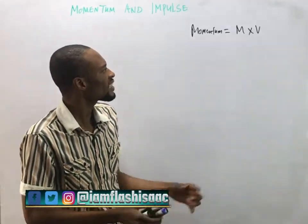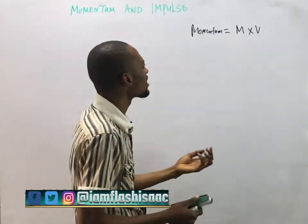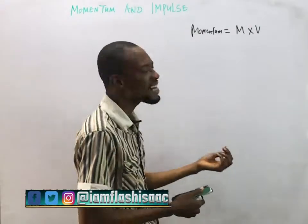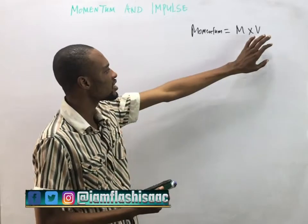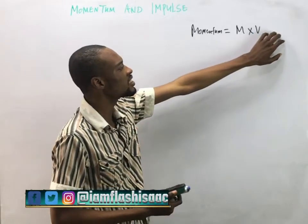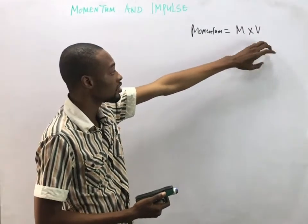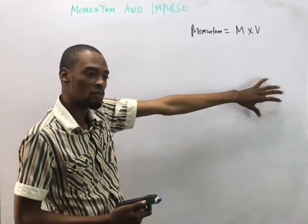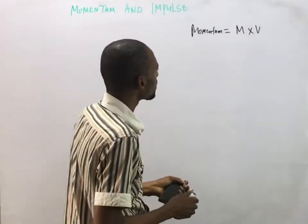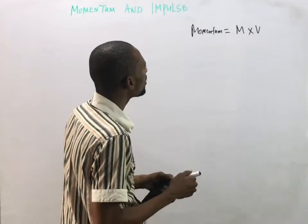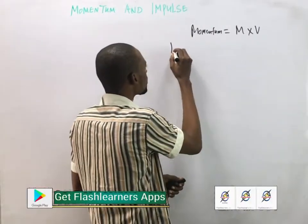Mass is the quantity of matter in a body, while velocity is the changing displacement of a body with time. In velocity, we have initial velocity and final velocity.